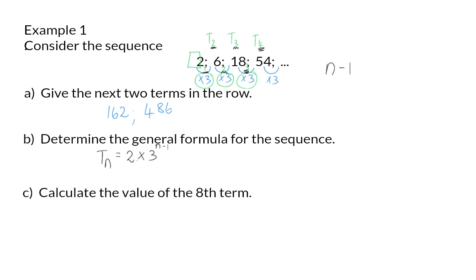Question C. Calculate the value of the eighth term. So now we can use our general formula to get term 8 by saying 2 multiplied by 3 to the power of 8 minus 1. Or you could have immediately said I start with term 1 and multiply it by 3 seven times because I multiply 1 less than the position of the term. This gives a value of 4,374.